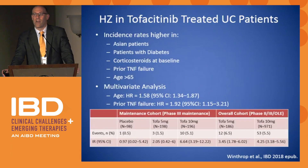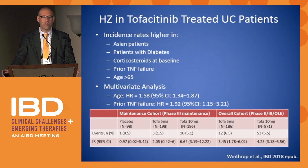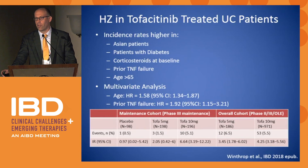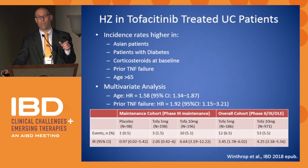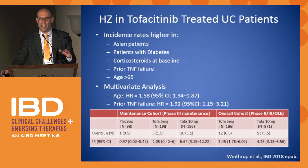They also looked at risk factors for developing zoster on tofacitinib in UC, similar to those seen in rheumatoid arthritis and psoriatic arthritis populations. For unclear reasons, Asian patients tend to develop zoster at a higher rate. Other risk factors included diabetes, steroids at baseline, prior anti-TNF failure, and age. On multivariate analysis, the two factors that emerged were age and prior anti-TNF failure. The zoster occurrence is also dose-dependent — the 10 mg twice-daily dose had higher rates of zoster than the 5 mg twice-daily dose, with absolute rates of just under 2% for the 5 mg dose and over 5% for the 10 mg dose.